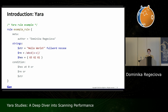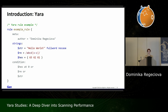The strings section — the name explains it all. You have strings you want to match in your samples. There are three types: plain text strings, regular expressions, and hexadecimal strings. You can also use options like 'fullword', which searches for strings between non-alphanumeric characters, and 'nocase', which makes matching case-insensitive.